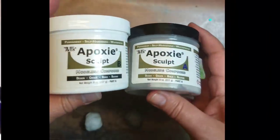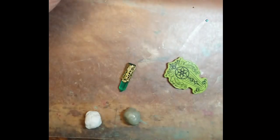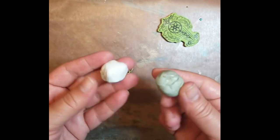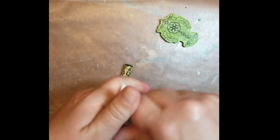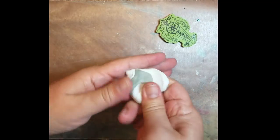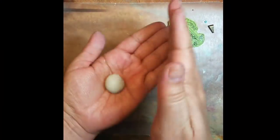Next I'm going to take two equal parts of epoxy sculpt. I'm going to mix them together following the package directions. I'll roll it into a ball and then into a small cylinder.